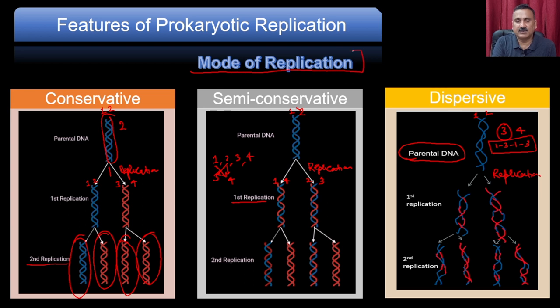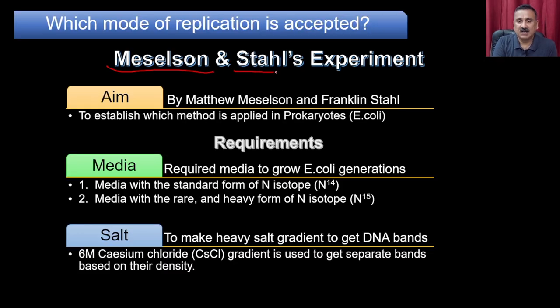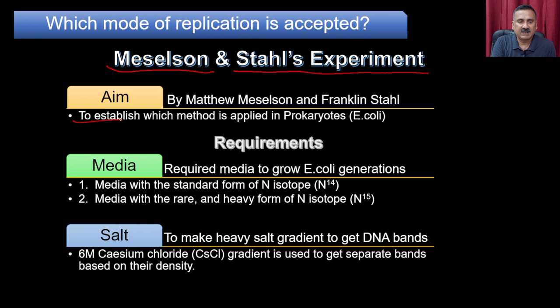We have three proposed modes: conservative, semi-conservative, and dispersive. The question is how we can scientifically prove which one is correct. A classical experiment was performed by Matthew Meselson and Franklin Stahl to establish which mode applies to prokaryotic replication — whether conservative, semi-conservative, or dispersive.